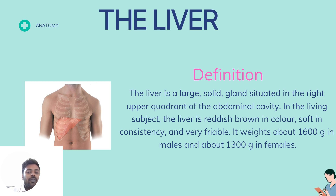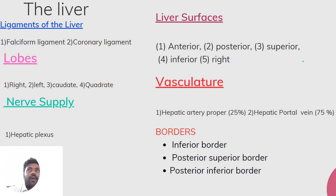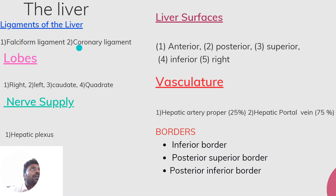The surgical removal of two-thirds of the liver may still be capable of sustaining life. The liver has five borders, three surfaces — actually five surfaces — and four lobes and two ligaments.